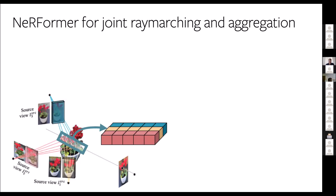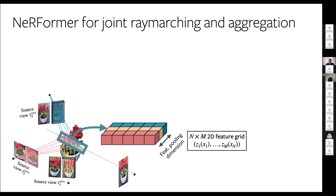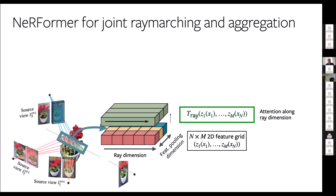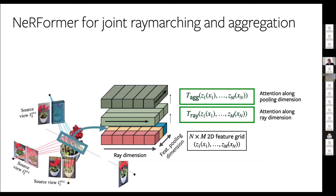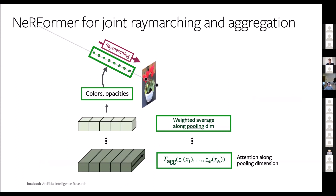NerFormer is essentially a joint ray-marcher and aggregator where both steps are executed using transformer layers. Given points on a ray, we sample all possible features from all source views, producing a two-dimensional feature grid — one axis is the source view/feature dimension, the other is the ray dimension. We pass this grid first through the ray-marching transformer attending to the ray dimension, then swap and attend to the aggregation dimension. We process the feature grid this way through transformer layers until we generate predictions of colors and opacities for all points along the ray, then ray-march using the emission-absorption formula.